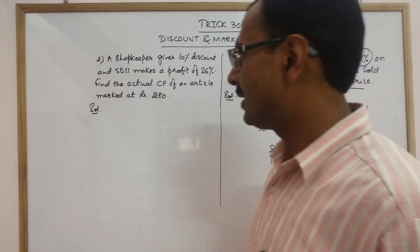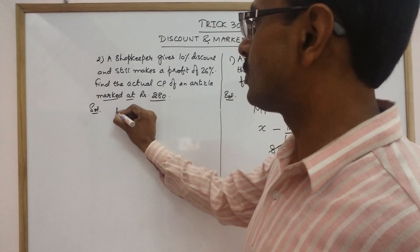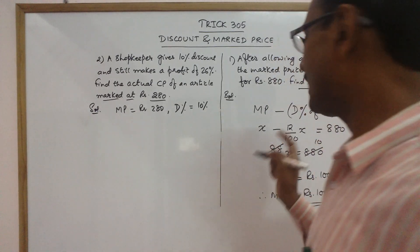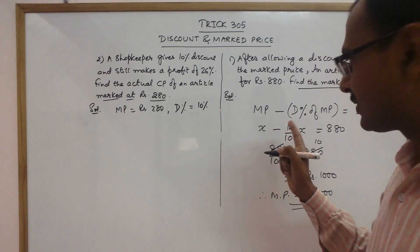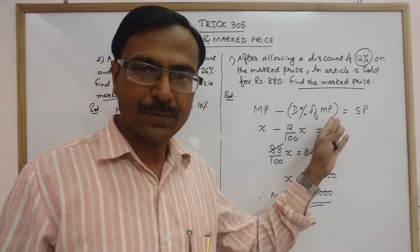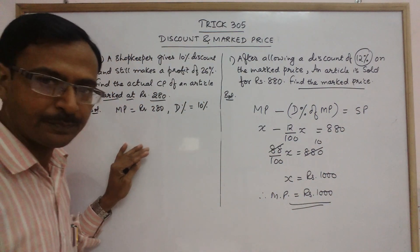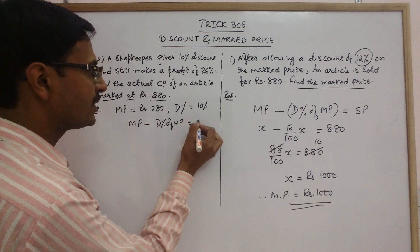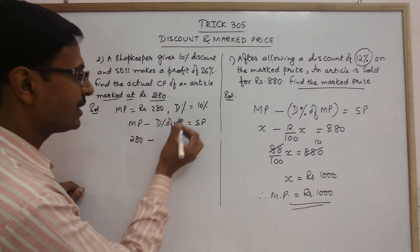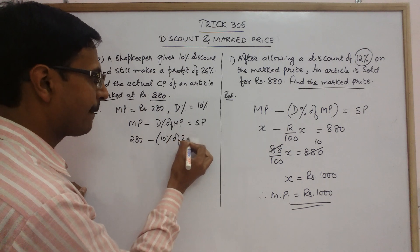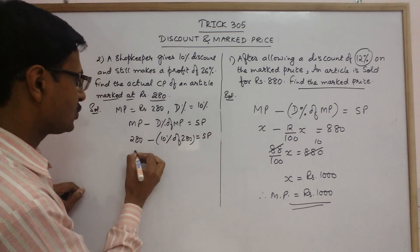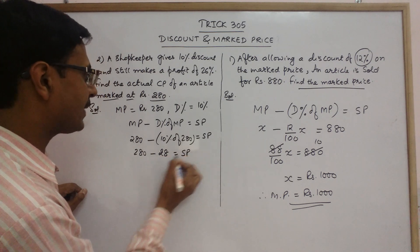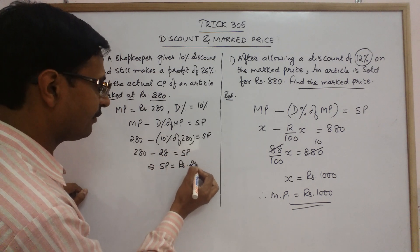The marked price of the article is given as rupees 280 and the discount percent is 10%. Using the same formula — marked price minus discount percent of marked price gives selling price — we get: 280 minus 10% of 280. Ten percent of 280 is 28, so the selling price comes out to be rupees 252.